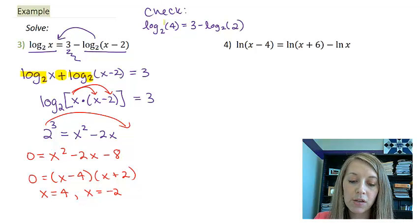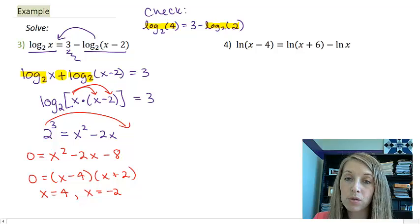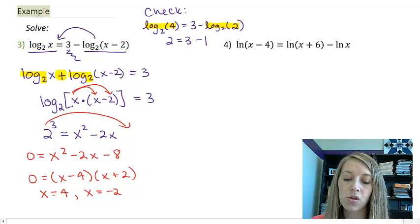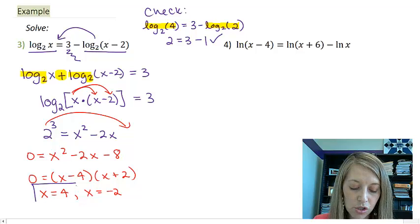Now if I treated each of these logs as a question, remember that's how I first posed it to you. 2 to what power is equal to 4? Well, that's 2. 3 minus 2 to what power equals 2? Or you can think about your bases canceling out, so that gives me 1. So my x equals 4, that solution checks out.